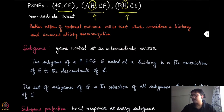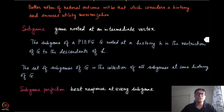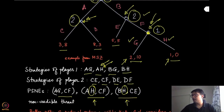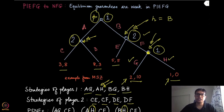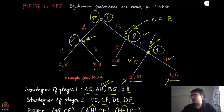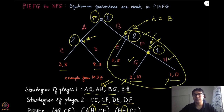By the name you can guess what subgames are: it is a game rooted at an intermediate vertex or a non-terminal history. The subgame of a PIEFG G rooted at a history H is the restriction of this game G to the descendants of H. For example, if we are at history B — because only one action has been picked by player one — the subtree rooted at that history is what we call the subgame rooted at history H.